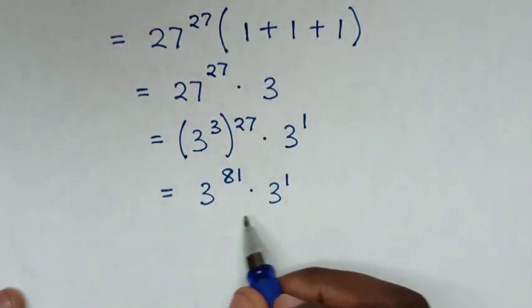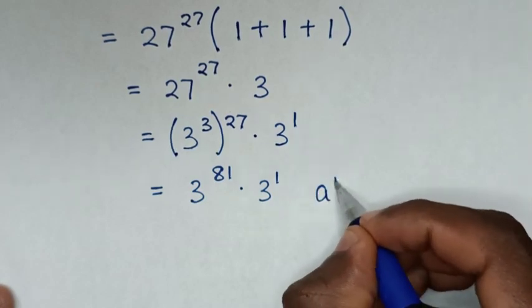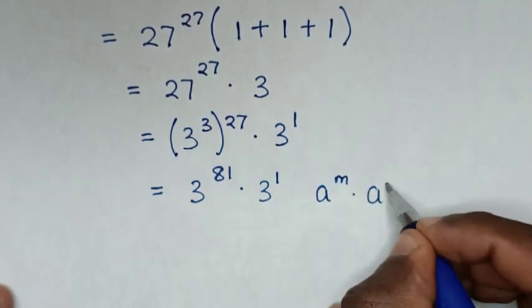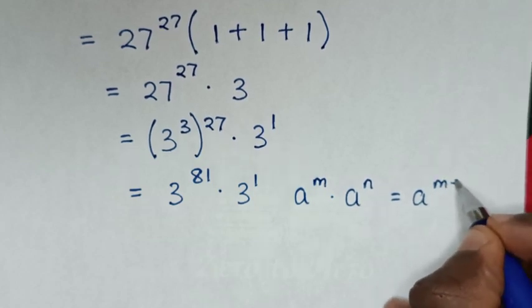Then, in here is multiplication of exponents with the same base of 3. So we'll apply the exponential rule: A to the power of M times A to the power of N equals A to the power of M plus N.